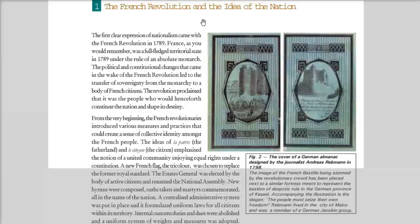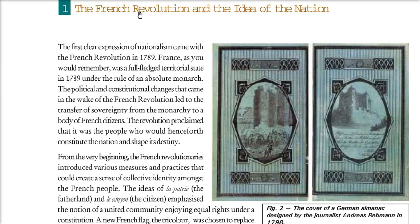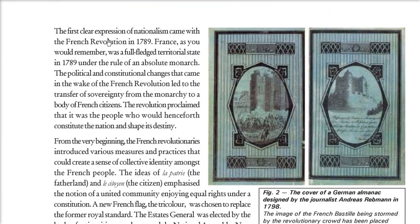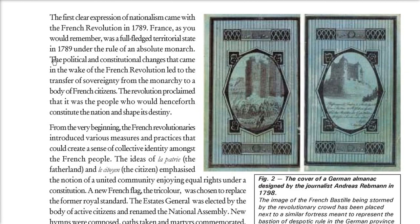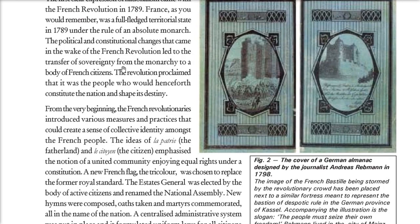For that, we have to go back to the French Revolution. The French Revolution and the idea of the nation: the first clear expression of nationalism came during the French Revolution in 1789. At that time, France was under the rule of an absolute monarch. Then, in the wake of the French Revolution, sovereignty transferred from monarchy to the citizens.